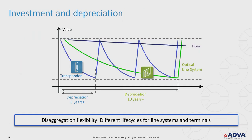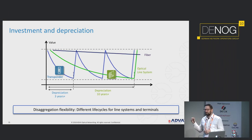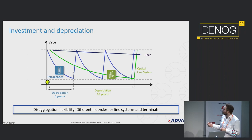There is a good business reason for alien wavelength or partially disaggregated networks: technology generation lifecycles differ significantly. Transponders typically have a 3-to-5-year generation cycle with new line speeds and improved energy efficiency, while the optical line system — fiber and distributed amplifiers deployed nationwide — has a depreciation lifetime of 10 to 20 years. Even financially and logistically, this disaggregated model for transponders makes sense.